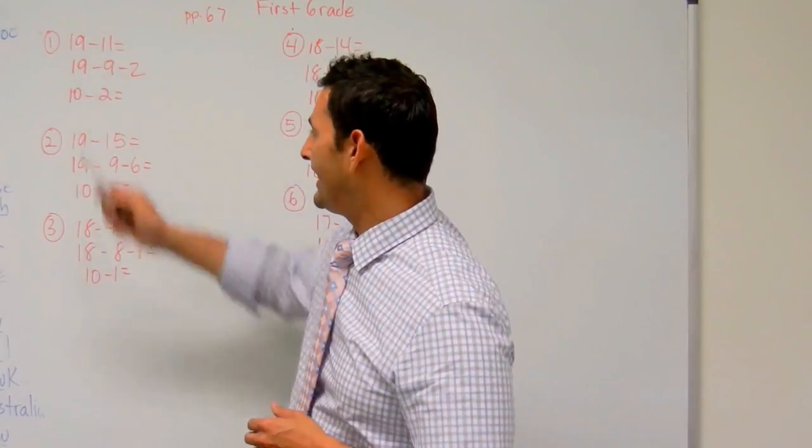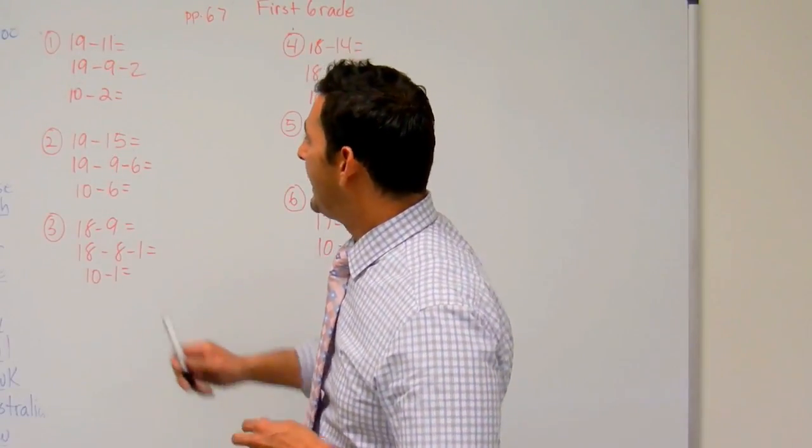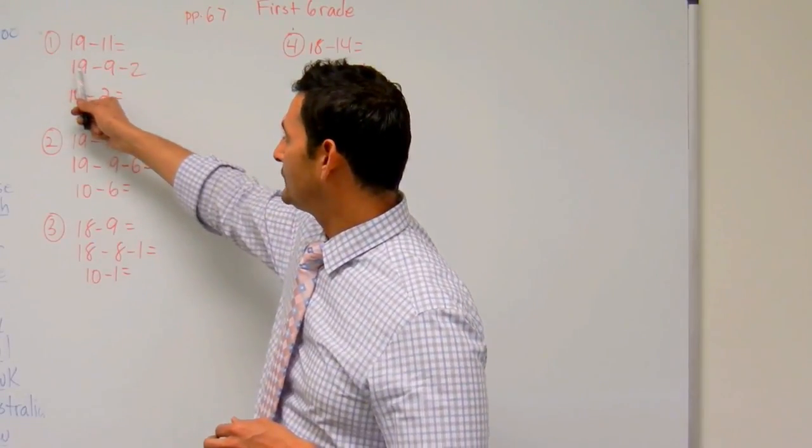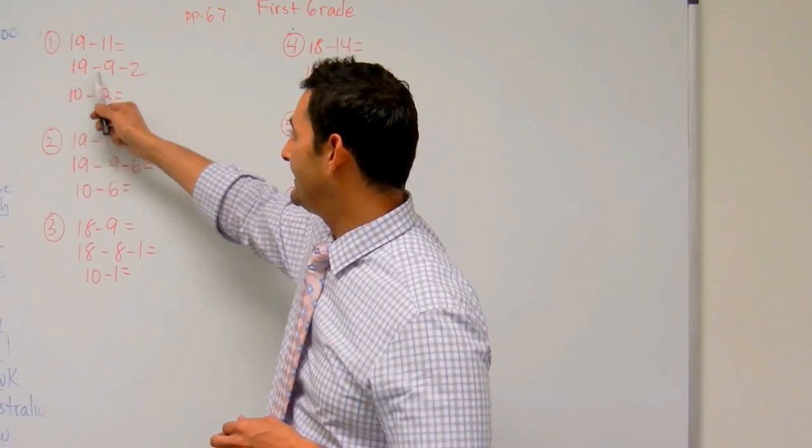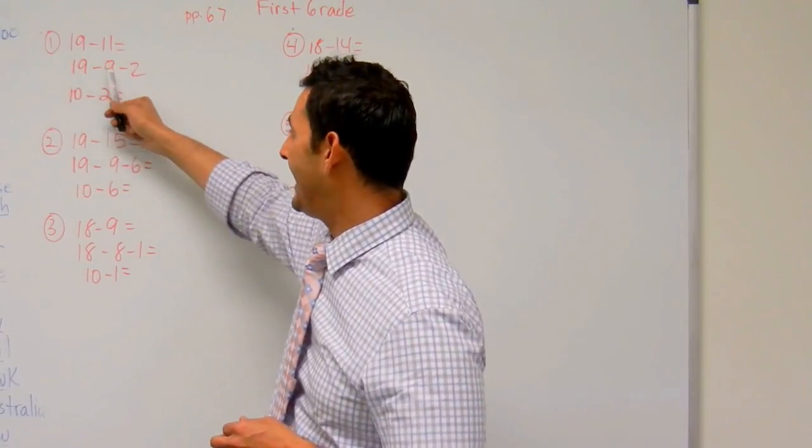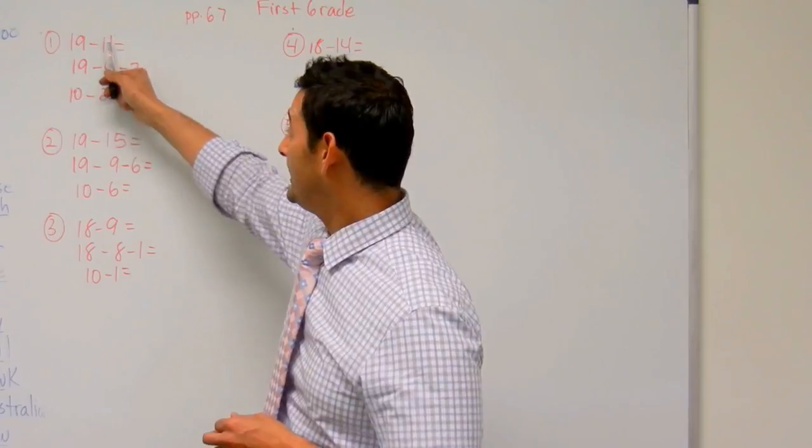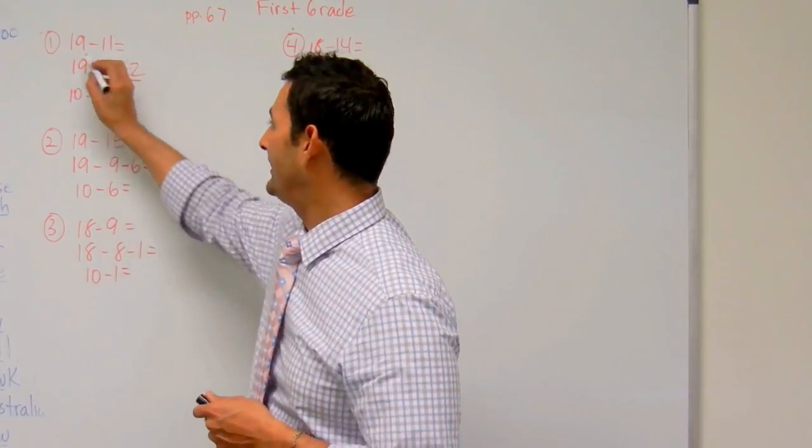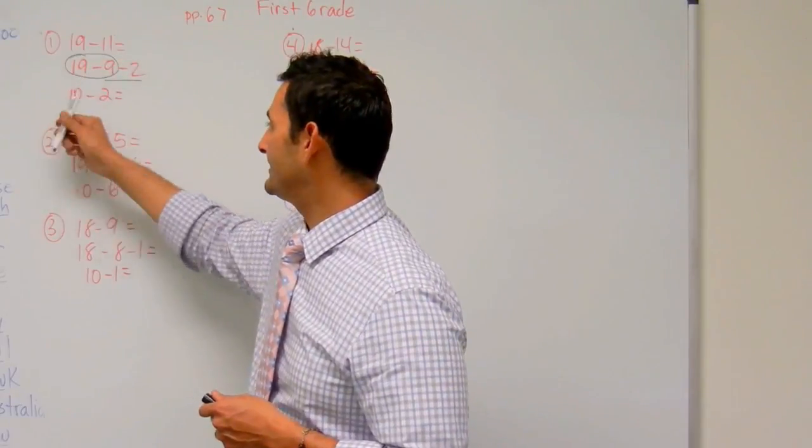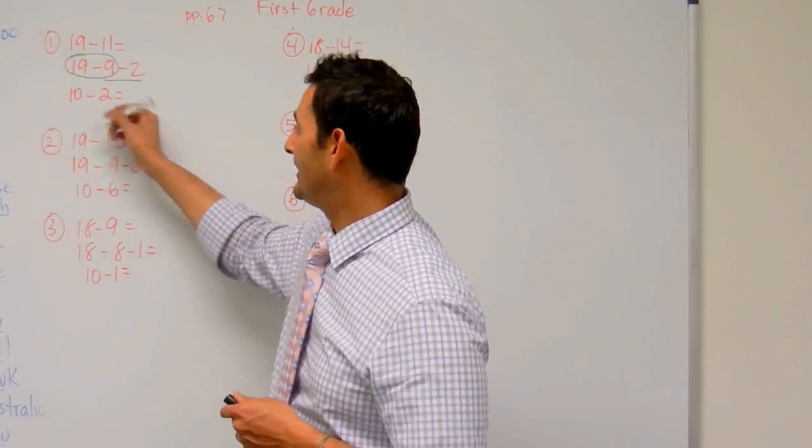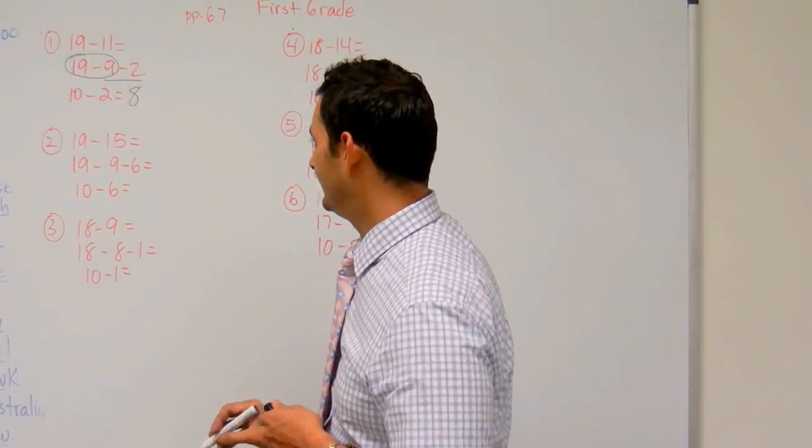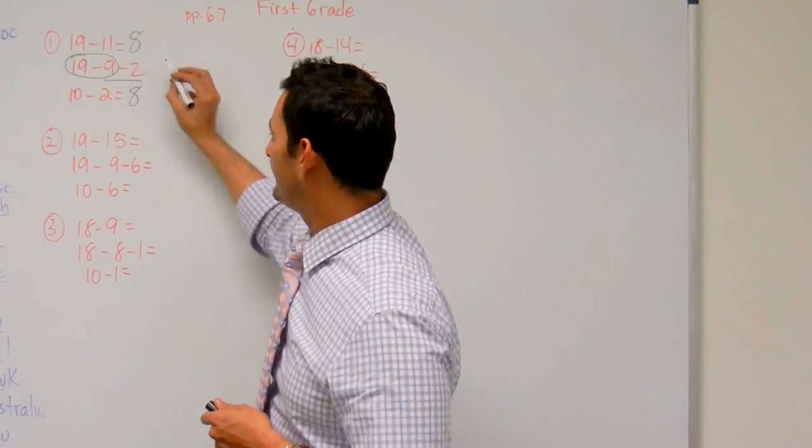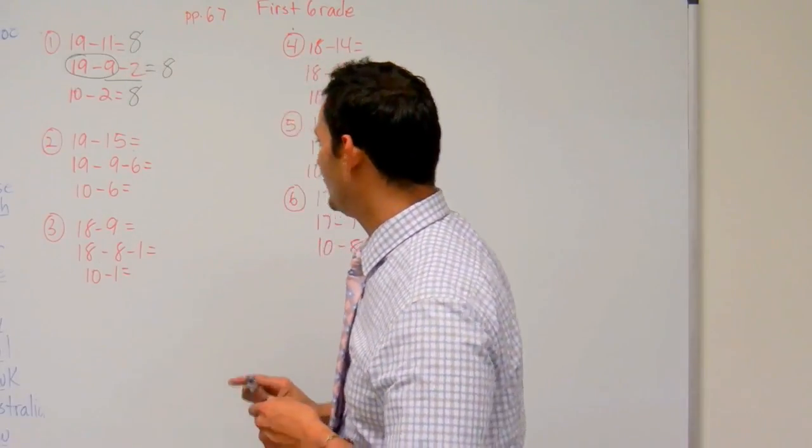So here we have 19 minus 11. Well, I know in order for this 19 to become a 10, I have to subtract it by 9. So here, this 9 minus 2, that's the 11 piece right there. And we know that 19 minus 9 is 10, so 10 minus 2 is 8. And 19 minus 11 is 8, and that's also equal to 8.